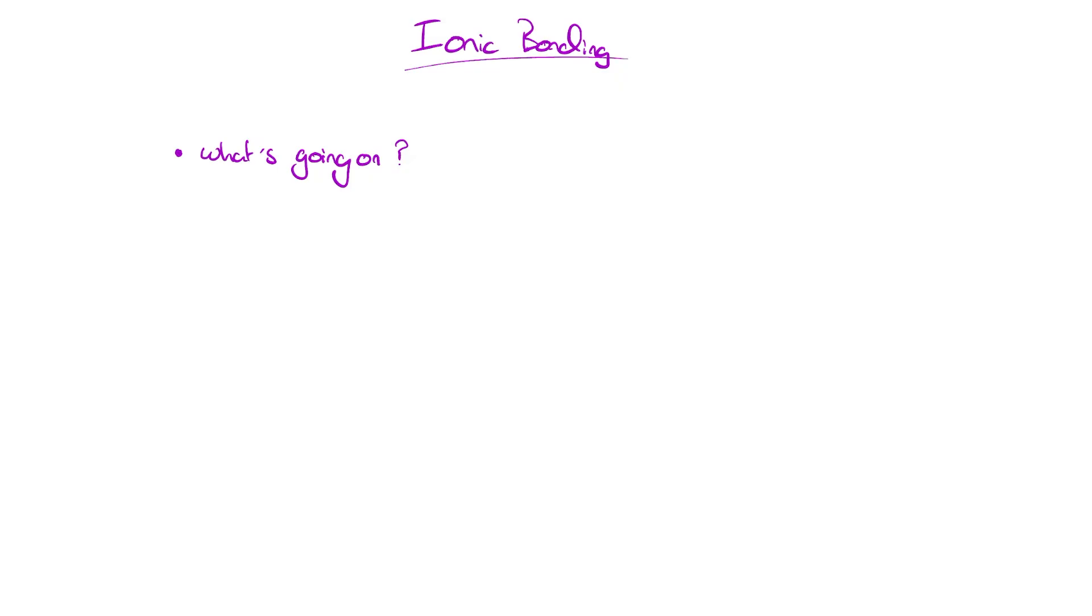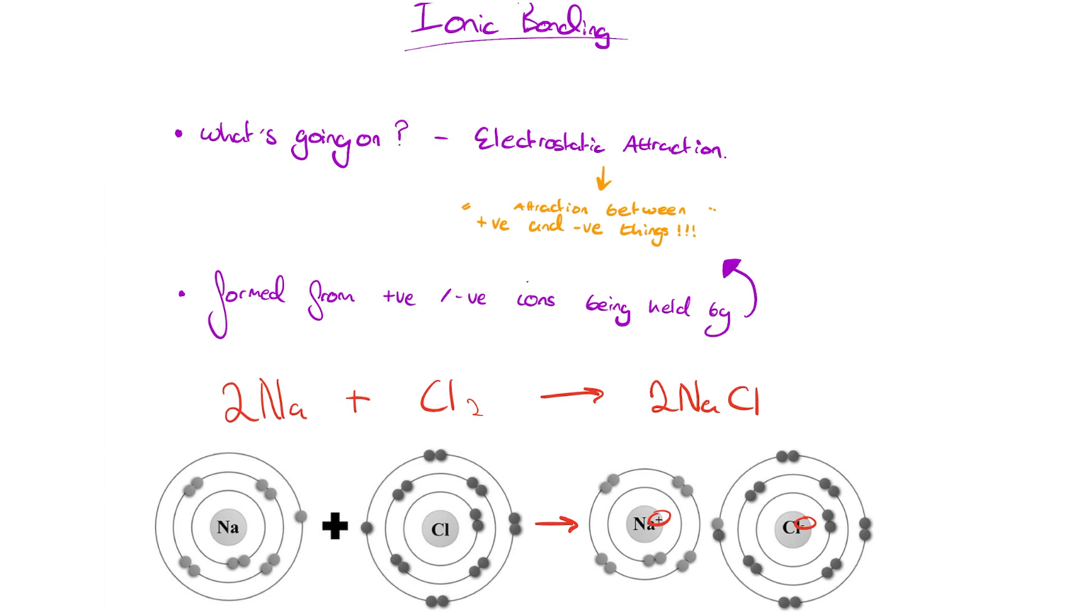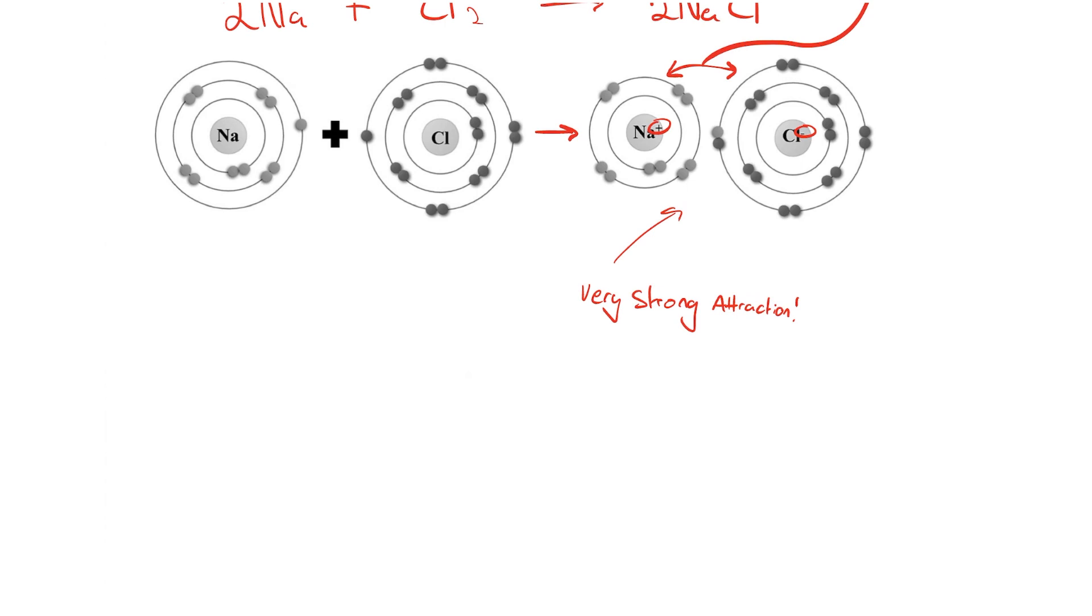Okay, now we're actually going to get on to ionic bonding, and talk about what's going on in an ionic compound. Electrostatic attraction, which simply means the attraction between positive and negative things. That is what's going on inside an ionic compound. You get an ionic compound when you react two things, for example, sodium and chlorine, and they react and form a positive and negative ion. Sodium loses an electron, chlorine gains one, and you've got a positive and negative ion. That creates an electrostatic force of attraction, and it holds positive and negative ions together in a very strong ionic bond.